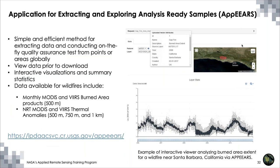I also wanted to highlight the APPEARS tool from the LP DAAC — the Land Processes Distributed Active Archive Center. APPEARS allows you to extract point and area location data for many datasets provided through the LP DAAC. You can view data prior to downloading, interact with it, make your own plots, and analyze values. Many datasets are available, including MODIS and VIIRS burned area products as well as near-real-time thermal anomalies for identifying actively burning fires. I encourage you to take a look at this great resource.